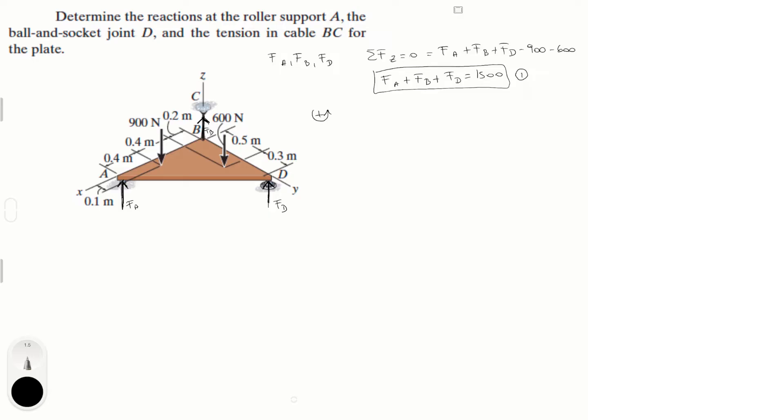Assuming counterclockwise is positive, sum of the moments around the x is equal to zero. Around the x-axis, you guys know what the x-axis is. What's creating a moment? The first moment is created by the 900 newton force and it's creating a moment of 900 times 0.1.